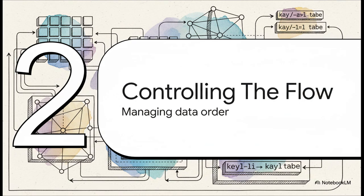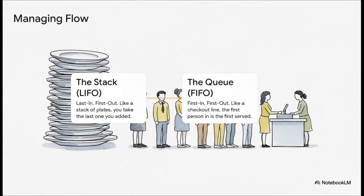So we've got ways to store a list, but sometimes the order in which we access things is just as important as how we store them. And this leads us to our next big idea, controlling the flow of data. Here we're looking at the two main strategies for managing that flow.